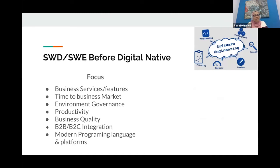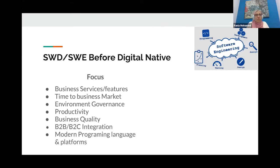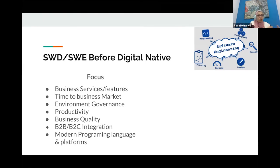Let's talk about how software development and software engineering were focusing before digital native — what were the main points and what problems were we targeting? The focus was on enriching business services and features, planning for new features. For example, in automotive, planning new models, new car designs, new functionality for the motor — speed, safety, and so on. Those are mainly automotive business features or automotive services.